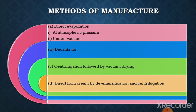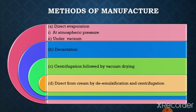There are various methods of butter oil manufacturing. These are categorized as: first, direct evaporation, which includes evaporation at atmospheric pressure and evaporation under vacuum; second, decantation; third, centrifugation followed by vacuum drying; and the last one is the direct-from-cream method by deemulsification and centrifugation.